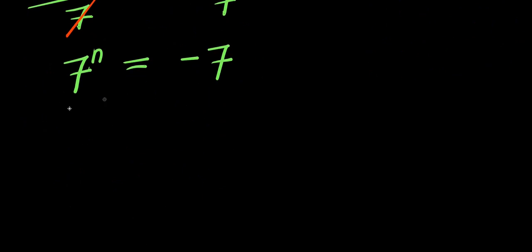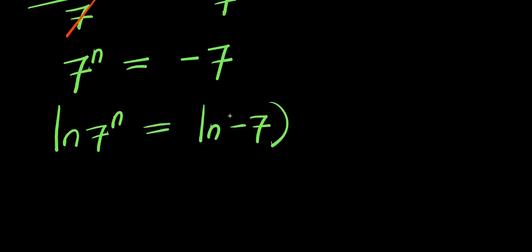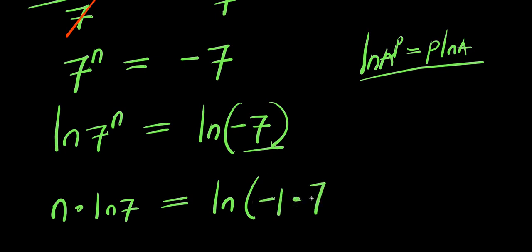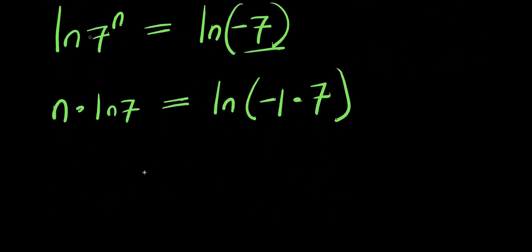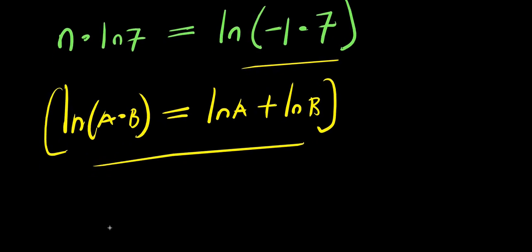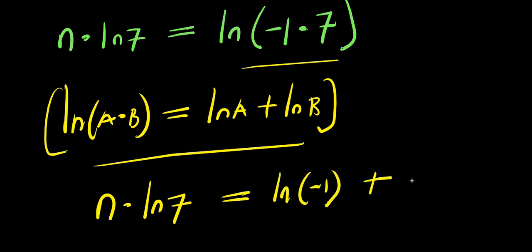From here I apply the natural log: natural log of 7 to the power of n equals natural log of negative 7. Using the rule that natural log of a to the power of p equals p times natural log of a, and also that natural log of a times b equals natural log of a plus natural log of b, I get n times natural log of 7 equals natural log of negative 1 plus natural log of 7.